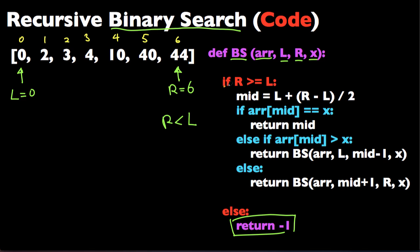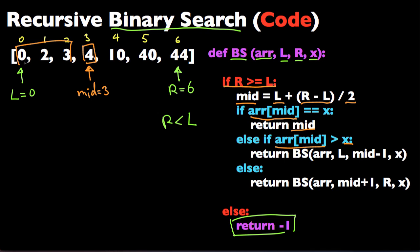If that's not the case, the first thing we do is find the position or the index of the middle element, and we do that by L plus R minus L divided by 2. So in this case that would be index 3, so mid would be 3. If the middle element is equal to X then we are done — we just found X, so we're going to return mid. If X is smaller than the middle element, then we're going to look at the left half of the array, so we're going to call binary search with the same array, the same X, and the same L — L doesn't change — but the new R becomes mid minus 1.